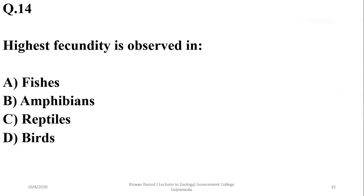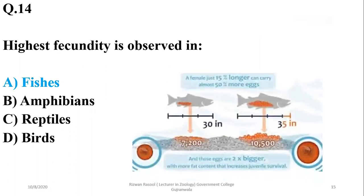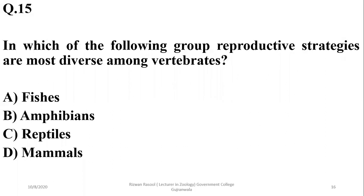The highest production of eggs is observed in fishes, which can lay a large number of eggs in one breeding season. Number fifteen: among vertebrates, amphibians use a variety of reproductive strategies as compared to other groups, so the right option will be beta.